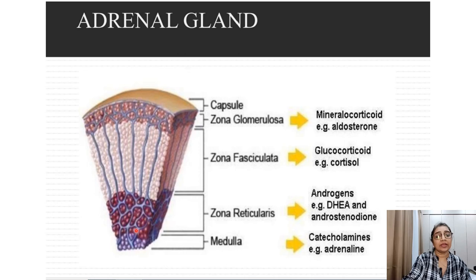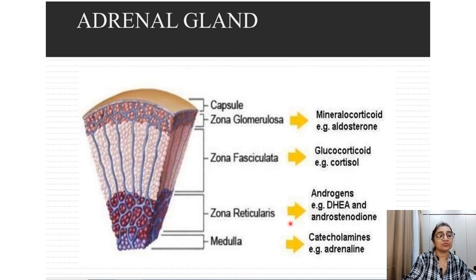The inner part is the medulla, which releases catecholamines, and the outer part is the cortex, which is divided into three layers. The outermost is the zona glomerulosa, which releases mineralocorticoids. The middle part is the zona fasciculata, which releases glucocorticoids, and the zona reticularis, which releases androgens.